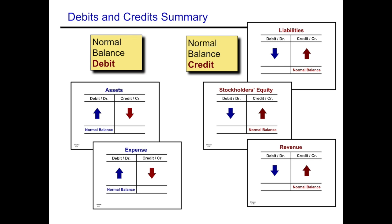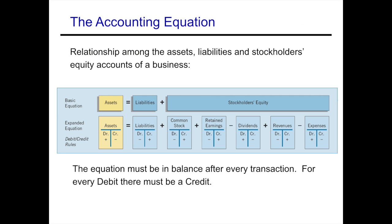Let's look at the expanded accounting equation where stockholders' equity is broken into its parts: common stock, preferred stock if applicable, retained earnings, dividends, revenues, and expenses. Always keep in mind that the accounting equation has to be in balance after every transaction, so every debit must equal every credit — for every debit, there has to be a credit.